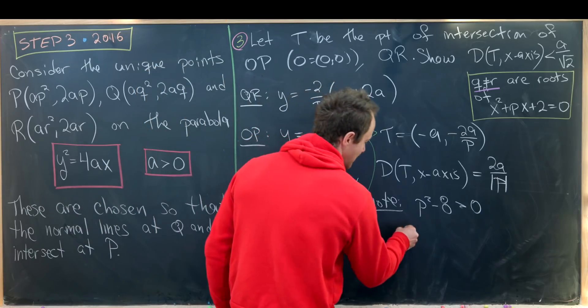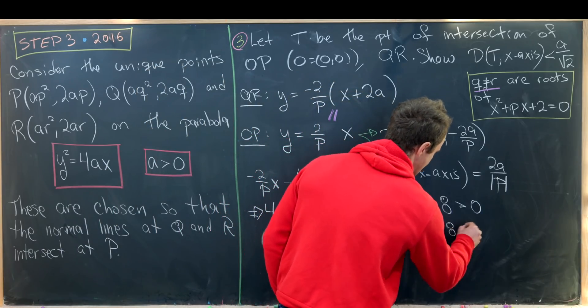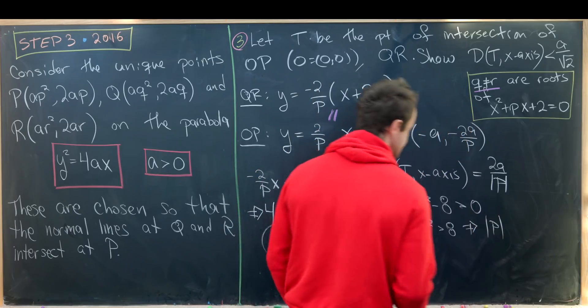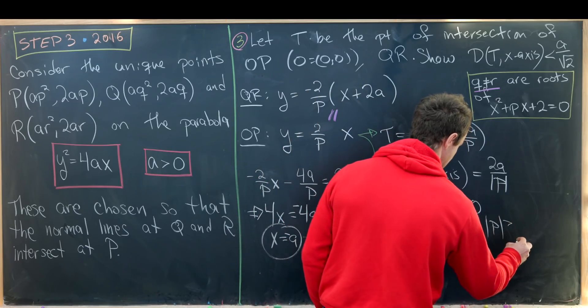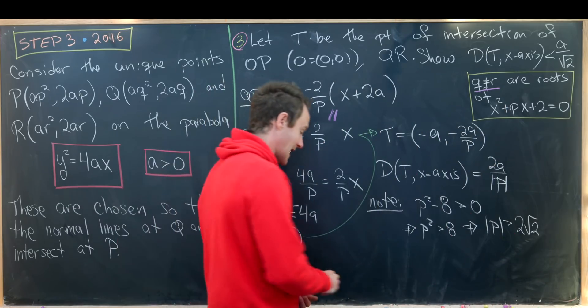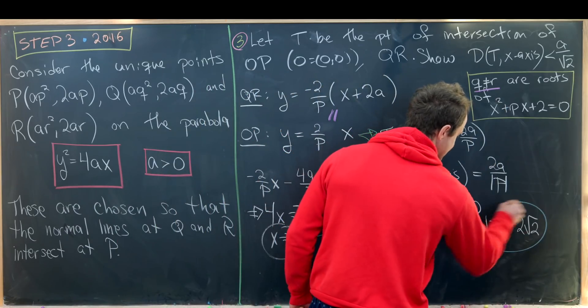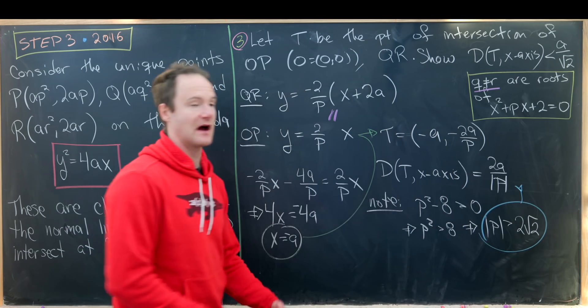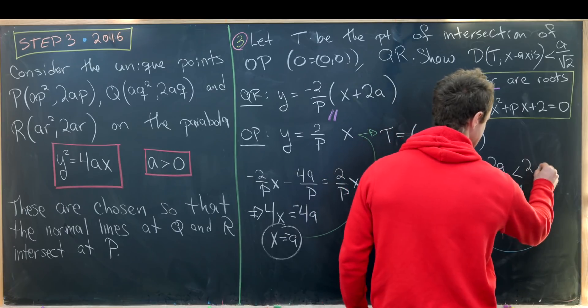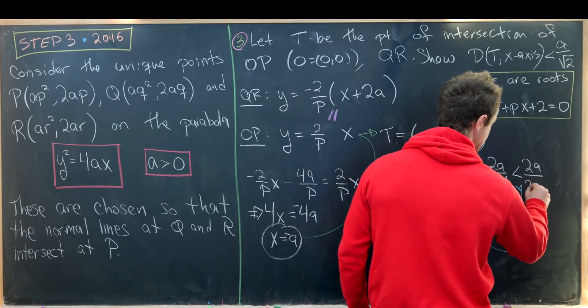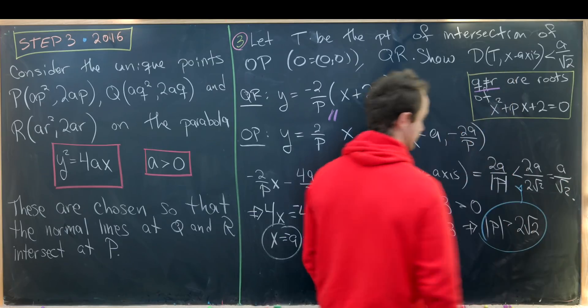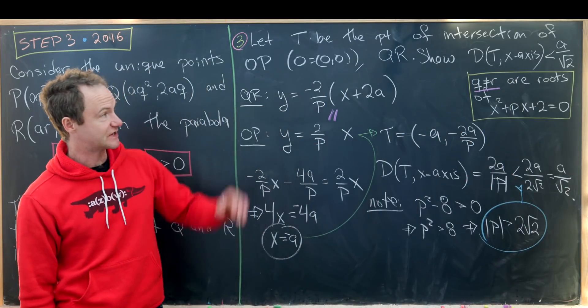But then that means that P² is bigger than 8. Taking the square root of both sides we get |P| > 2√2. But now if we plug this inequality up here keeping in mind that we're taking the reciprocal we get that this is less than 2A/(2√2) which is equal to A/√2 which finishes this problem.